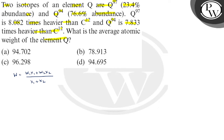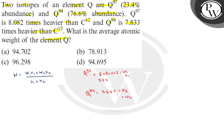You can see here that W1 is 8.082 times carbon-12, which is 12. X1 is 23.4 for Q97, and Q94 gives us 76.6% abundance. W2 is 7.833 times carbon-12.